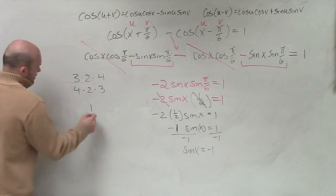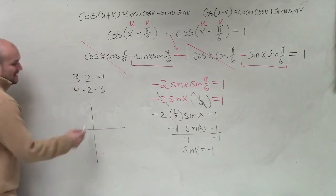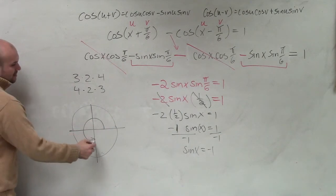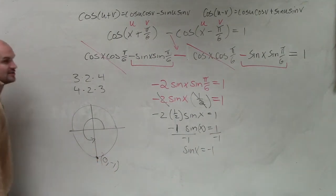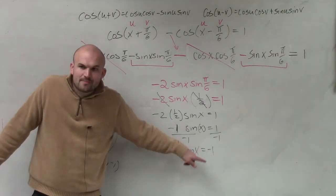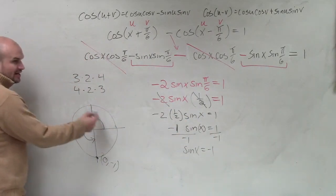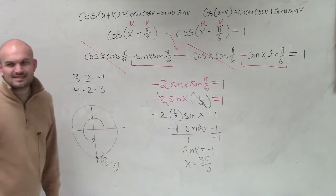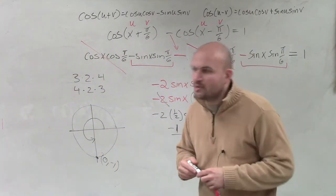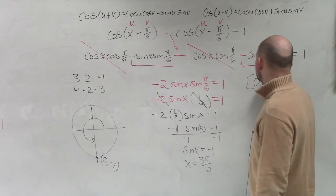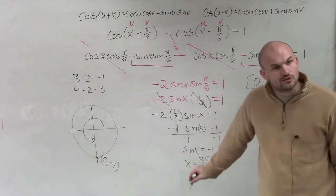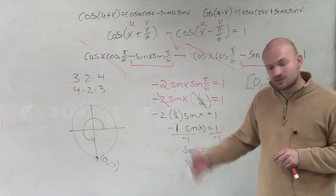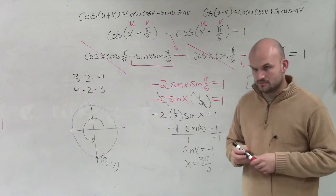So, again, we have to go back to that unit circle and say, well, when is the y-coordinate negative 1? So we look at all those x and y-intercepts, and there's only one point where it's going to be negative 1. And now we need to determine, well, what is that angle, right? What is the angle that makes the y-coordinate negative 1? If we start here and we go all the way to here, it's going to be 3π over 2. Now, I didn't tell you guys the solution. They wanted it only between 0 and 2π, which was in the book, but I didn't tell you that. So therefore, that's going to be our only solution.